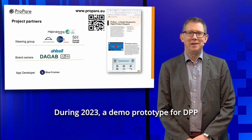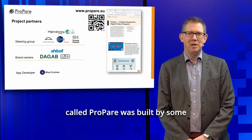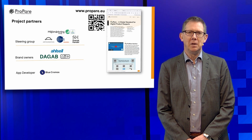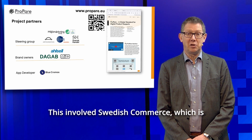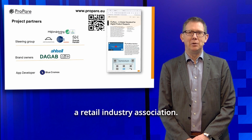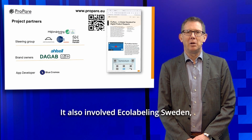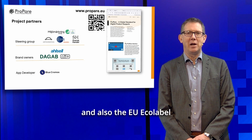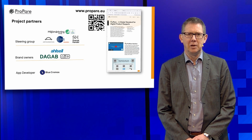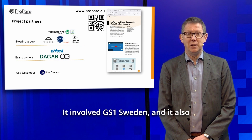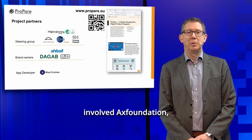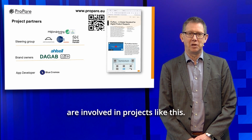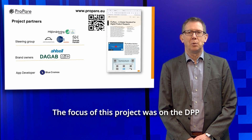During 2023, a demo prototype for DPP called PREPARE was built by some stakeholders in Sweden. This involved Swedish Commerce, which is a retail industry association; Ecolabeling Sweden, which is the issuer of the Nordic Swan ecolabel and also the EU ecolabel for Sweden and the Nordics; GS1 Sweden; and also the X Foundation, which is a sustainability do-tank involved in projects like this.